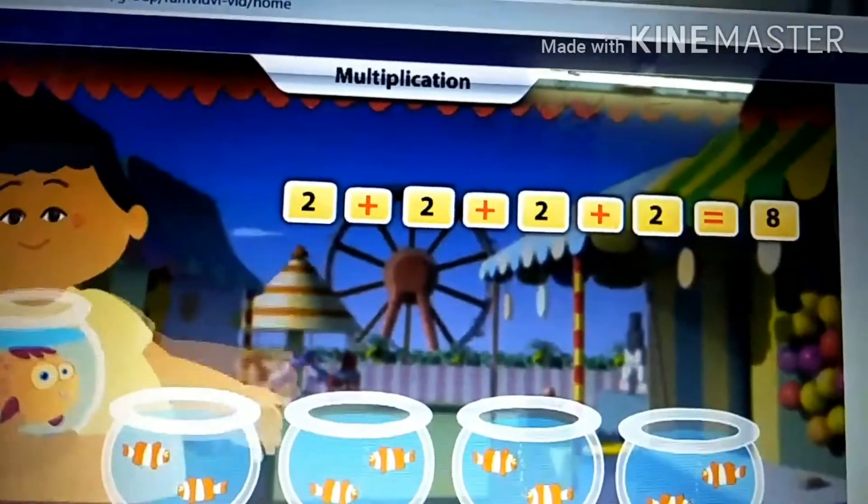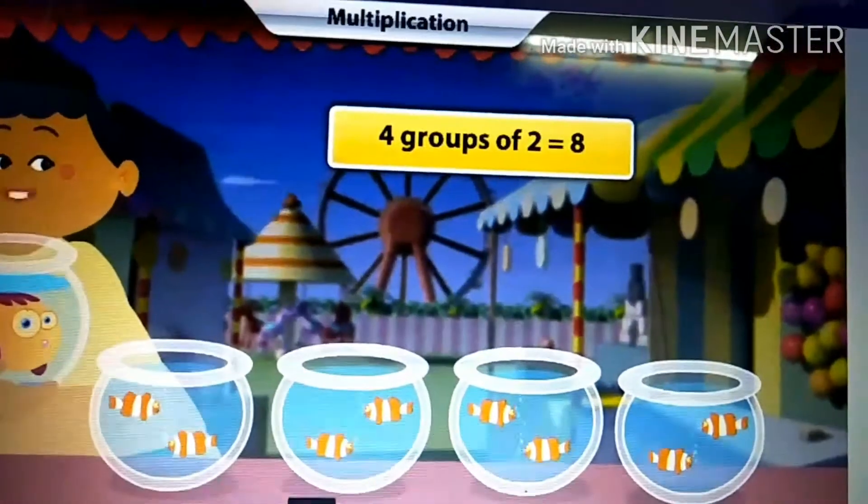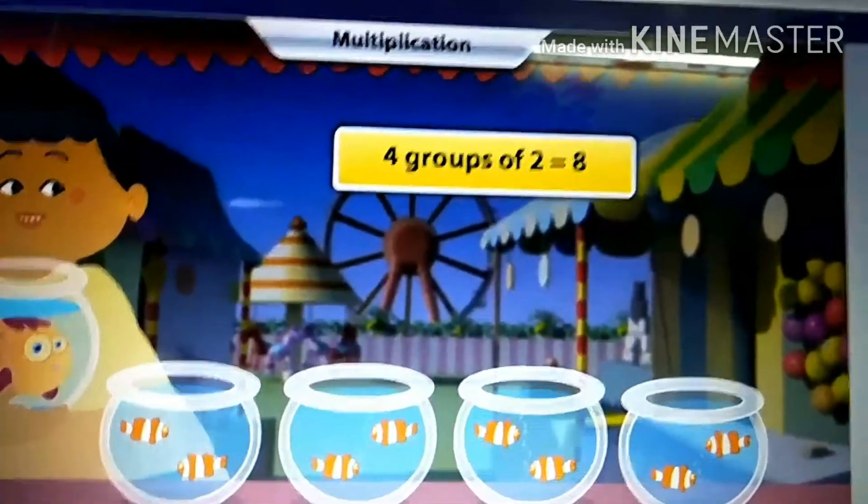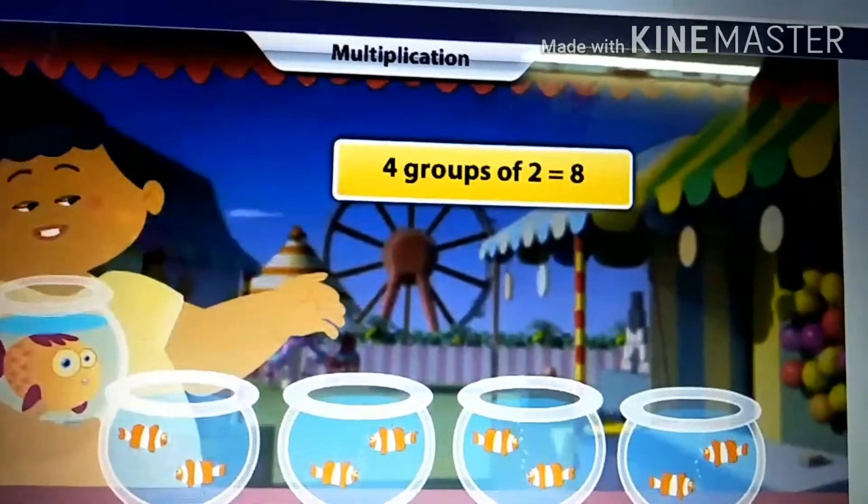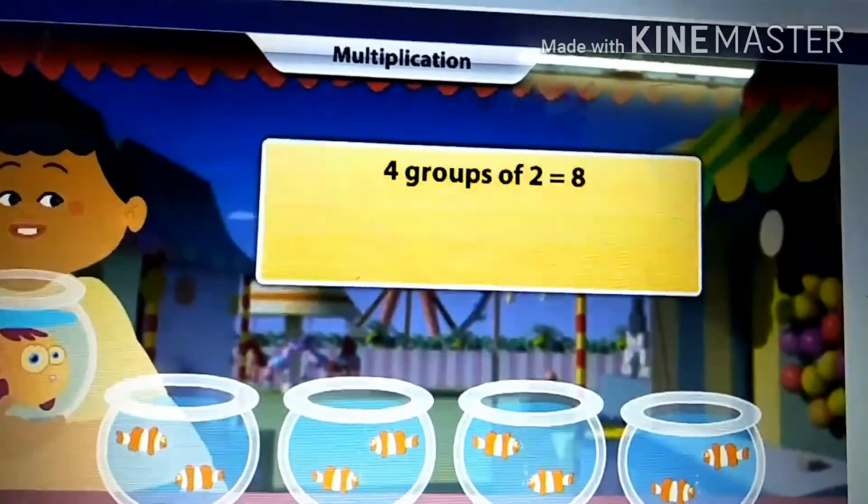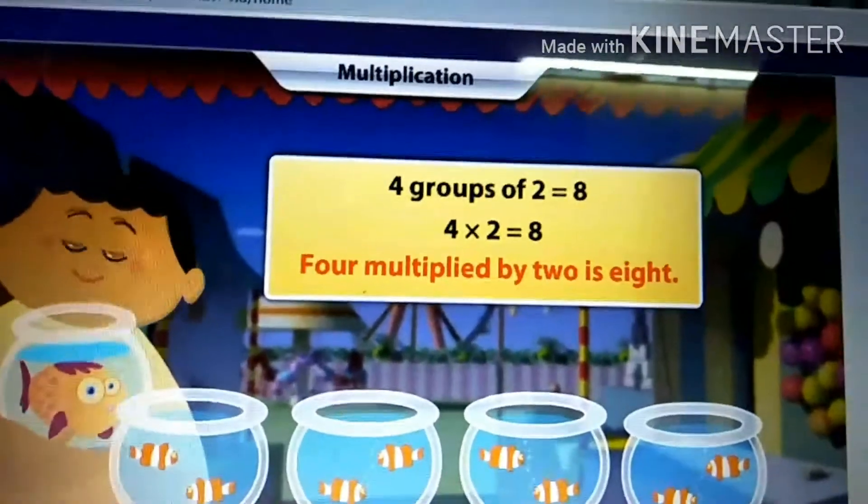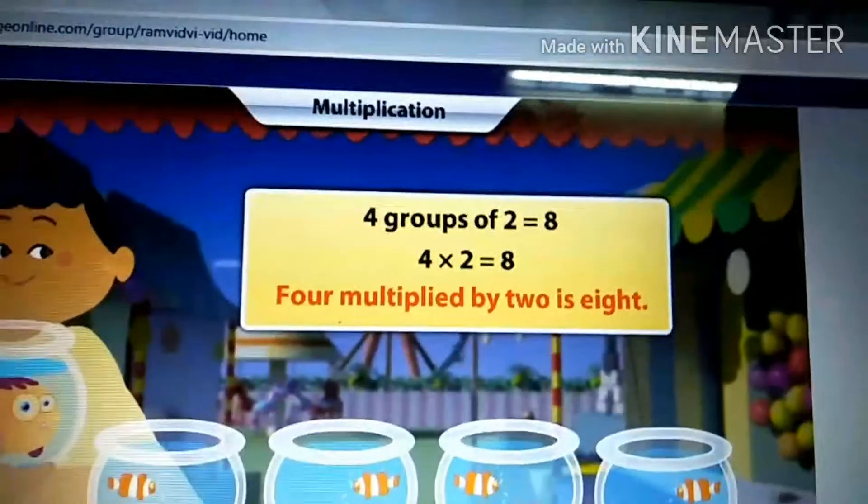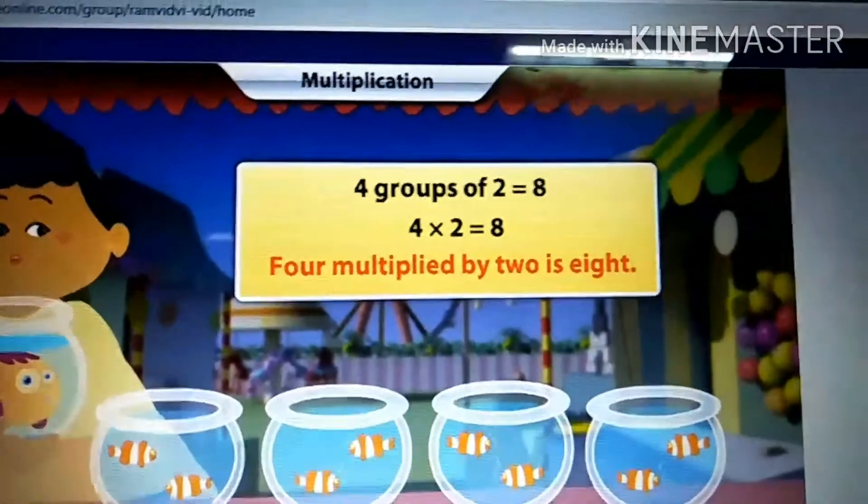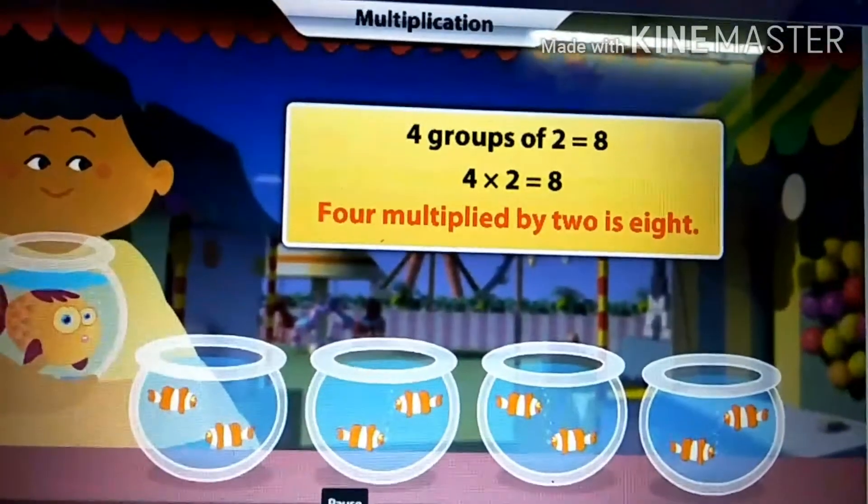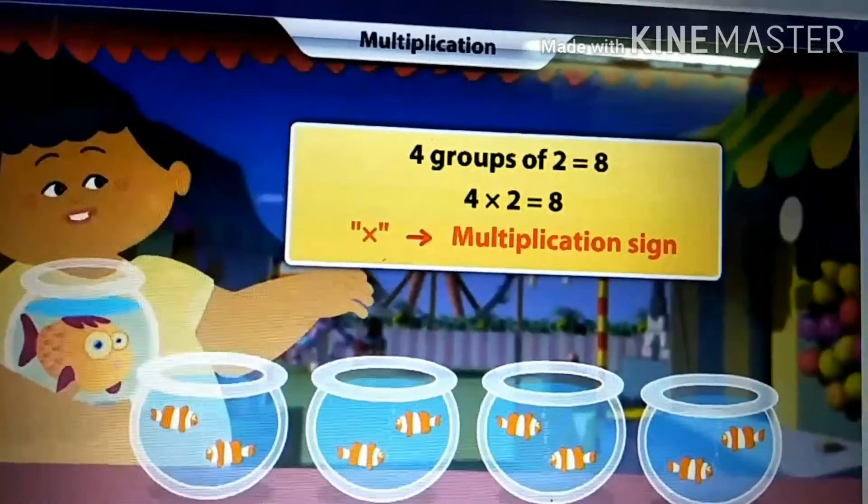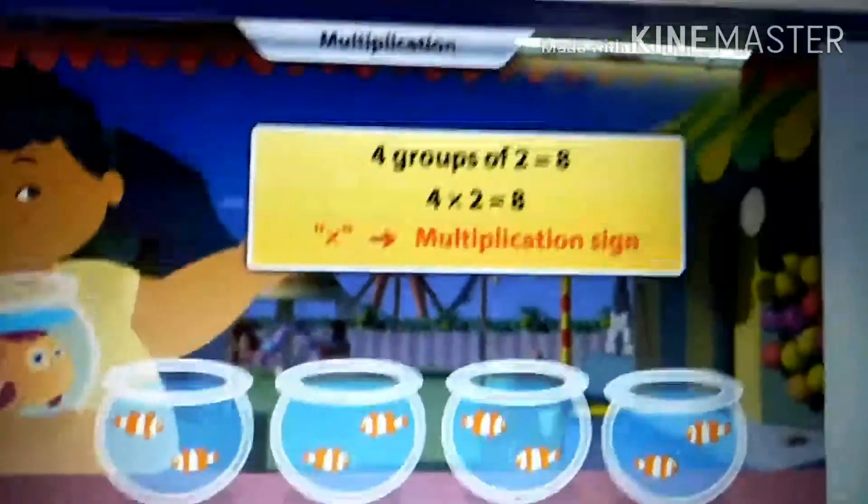There are eight clownfish in these bowls. Do you know another way of writing four groups of two is equal to eight? See, we can also write the expression like this: four multiplied by two is eight. This is the multiplication sign.